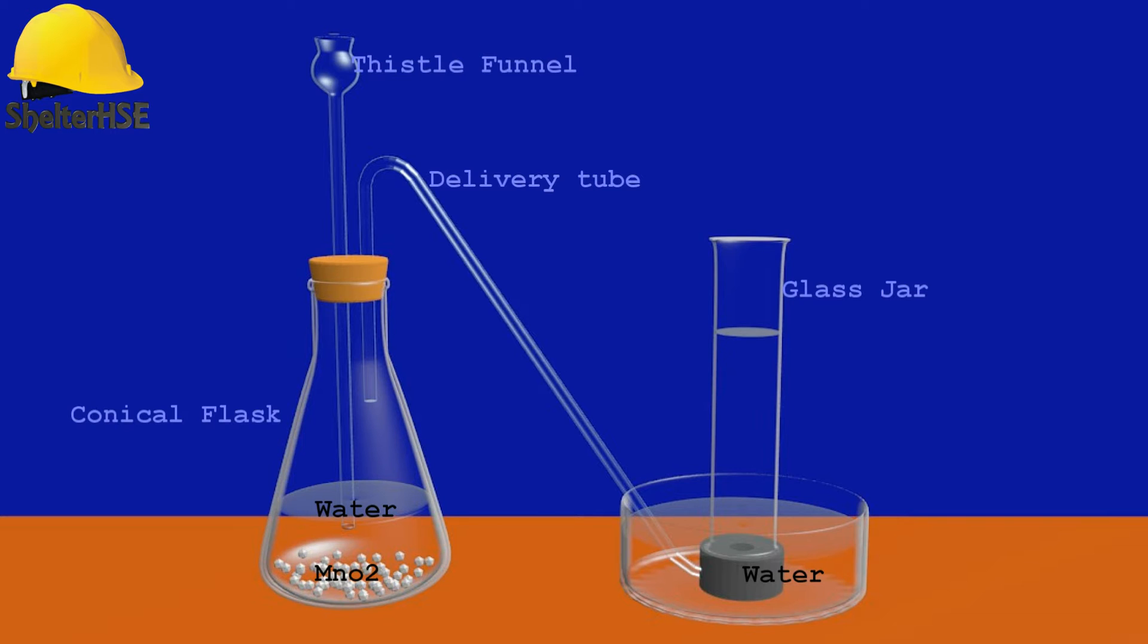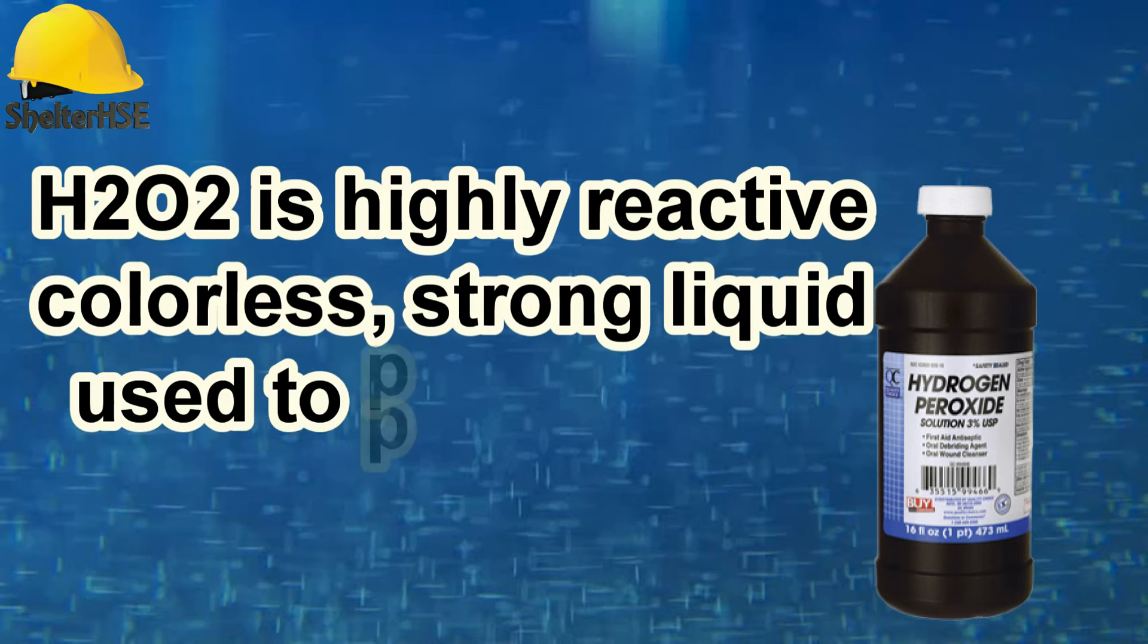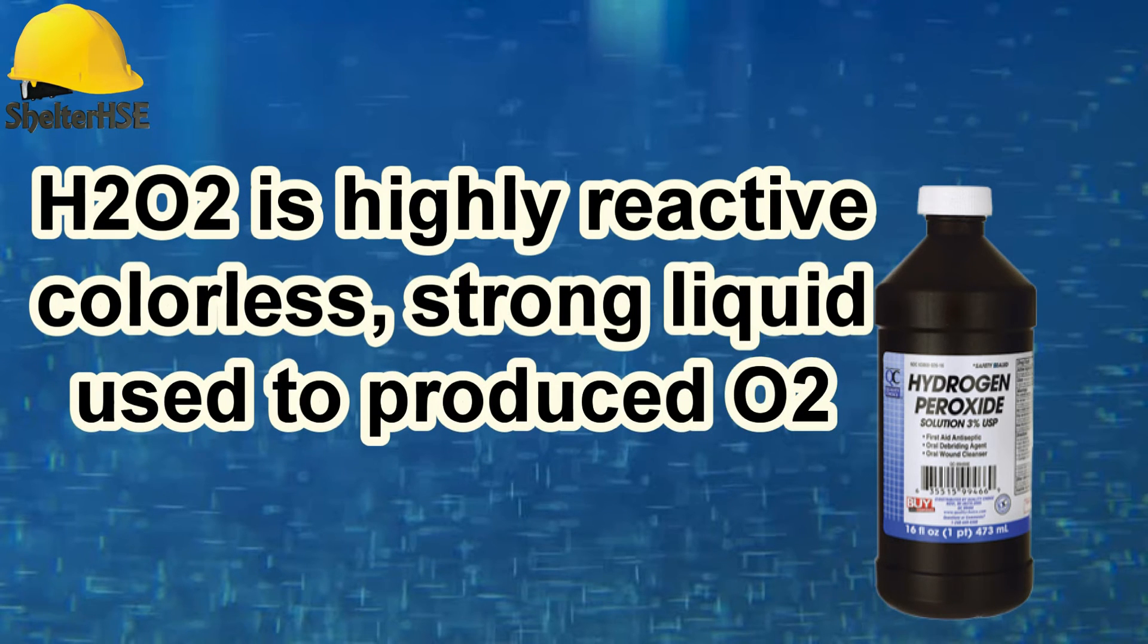is ready, pour hydrogen peroxide slowly via thistle funnel. Hydrogen peroxide is a colorless, strong, heavy oxidizing liquid with the chemical formula H2O2. It is highly unstable and used to produce oxygen gas in laboratory.